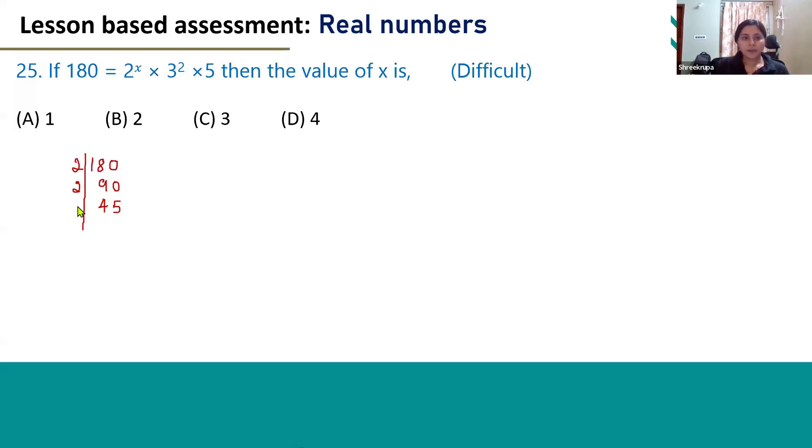Can we divide this number by 3? Yes, we can divide 45 by 3, it will become 15. So 3 × 5 = 15. This 15 can be divided by 3, so 3 × 5 = 15. But 5 cannot be divided by 3.